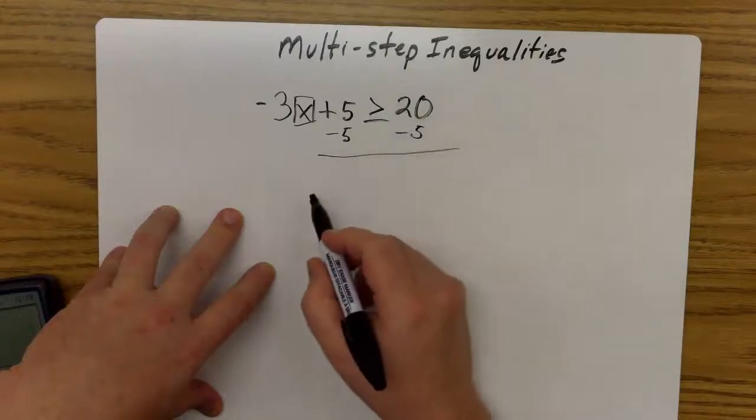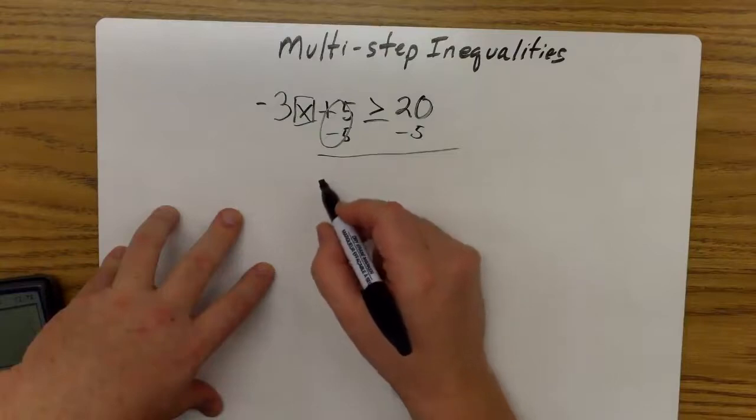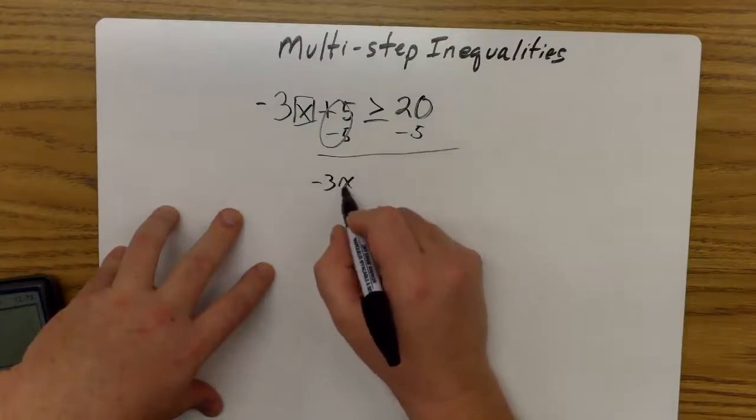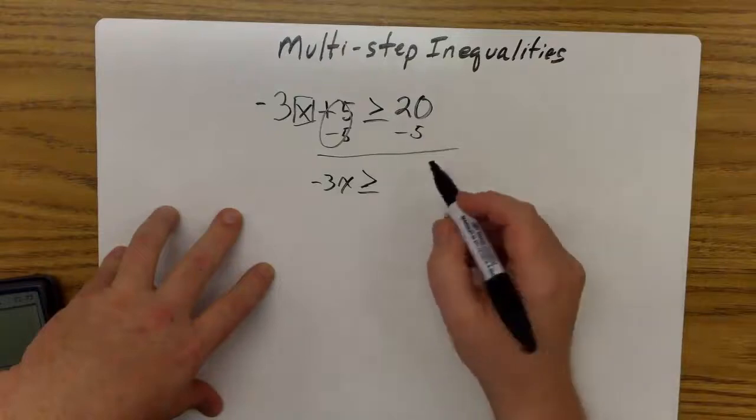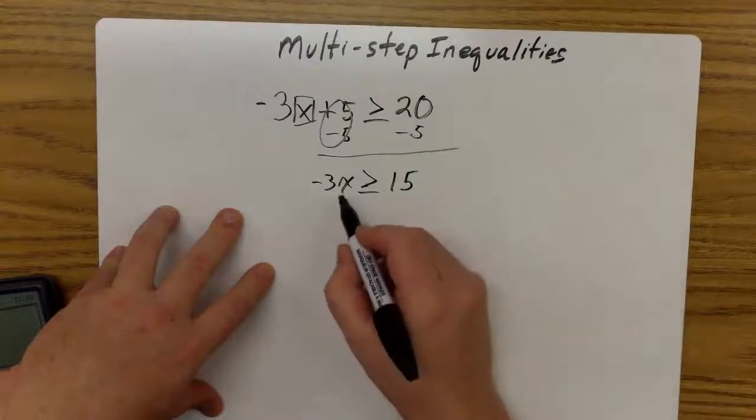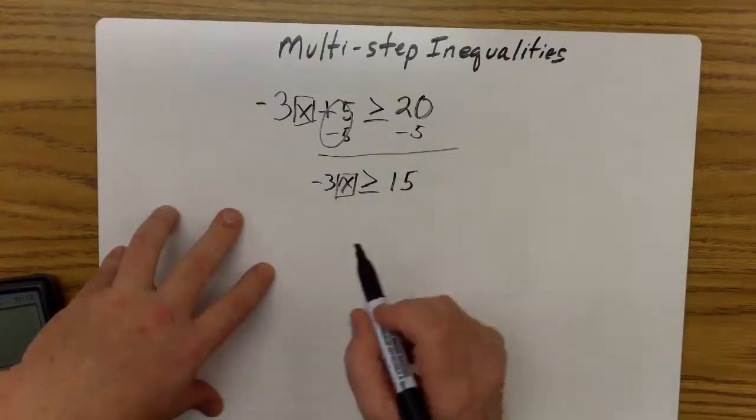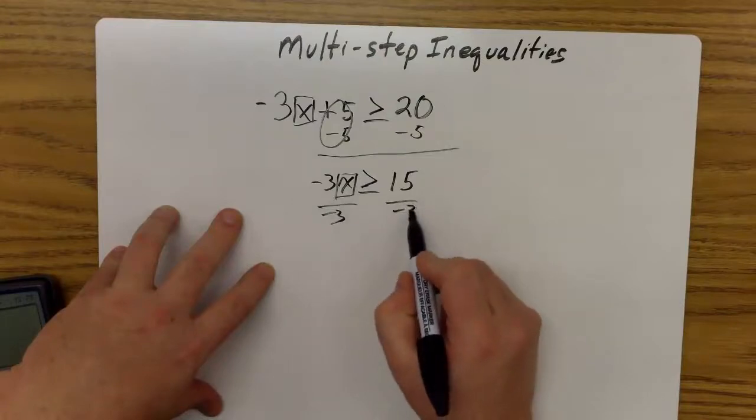I've only got two steps here, so I'm going to solve by getting rid of my 5, which is my addition. So I'm going to subtract 5 from both sides. This gives me 0 plus -3x, which equals -3x, and this is still greater than or equal to 20 minus 5, which is 15. I'm still solving for x, so I'm going to divide by -3.